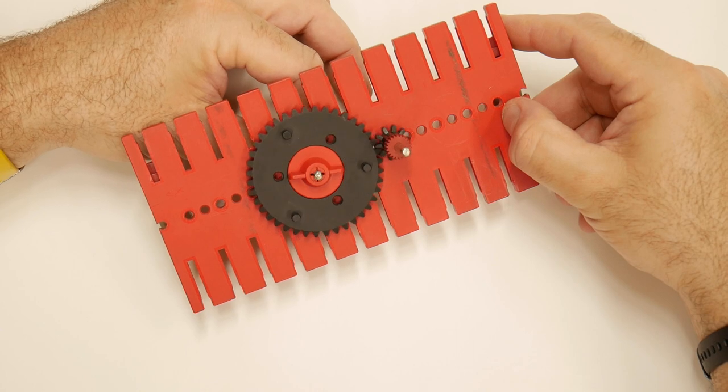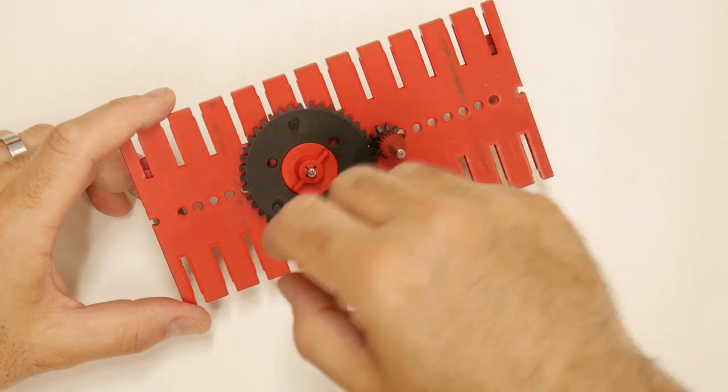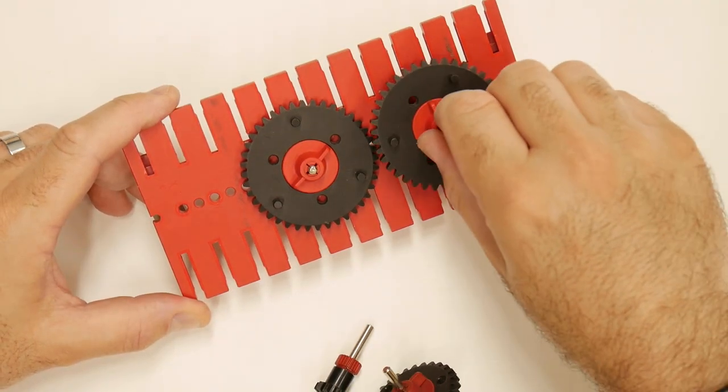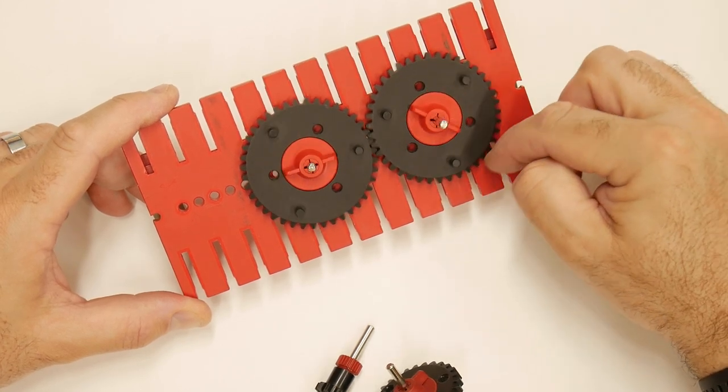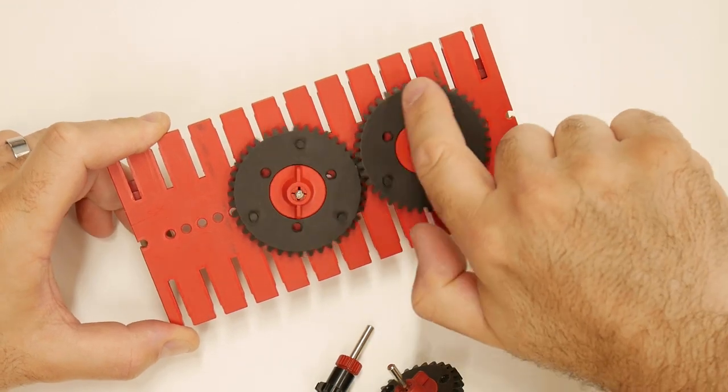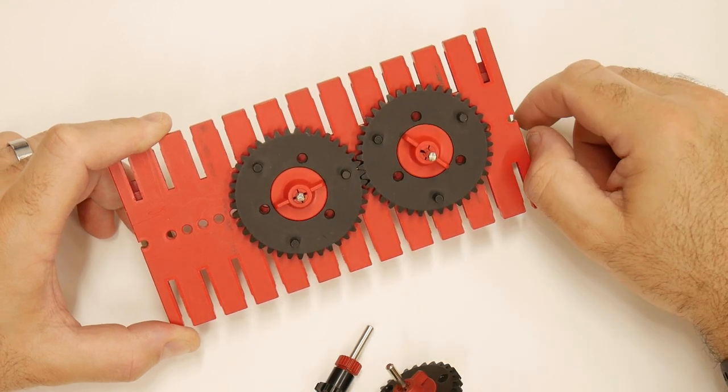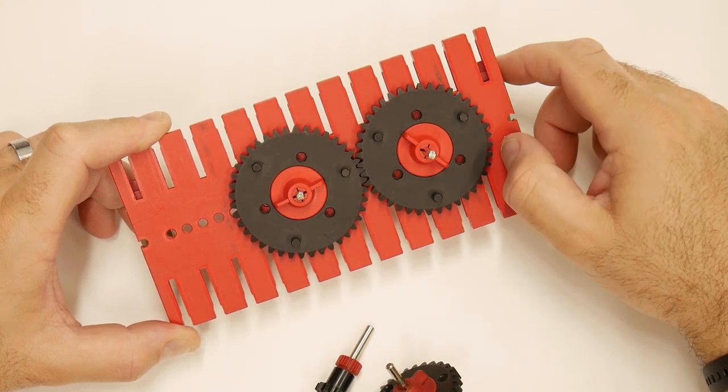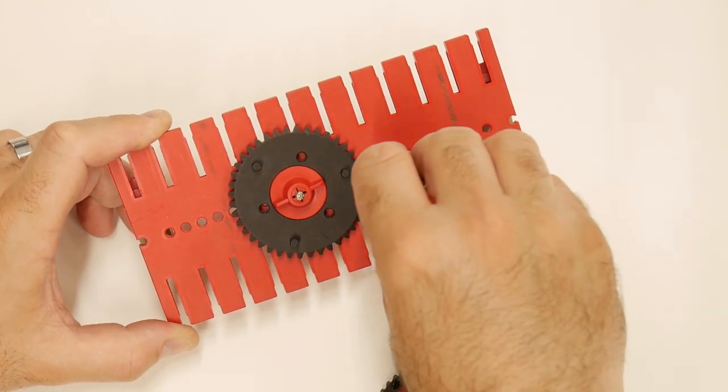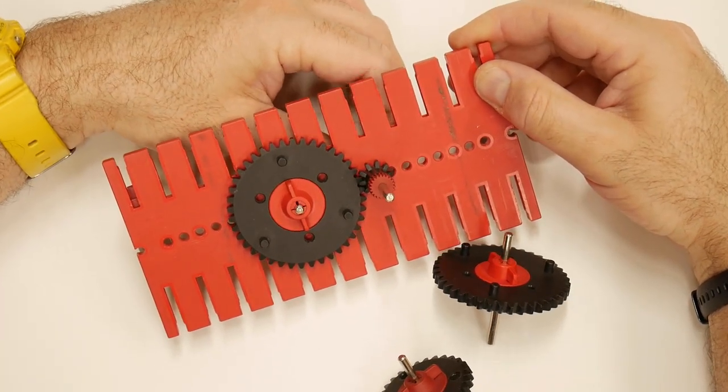We can change this also if we have, for instance, a similar gear. This is a 1 to 1 ratio, means if I rotate this right gear one full turn, the second one is rotating the same. So always be careful, if you change this, you change the gear ratio.